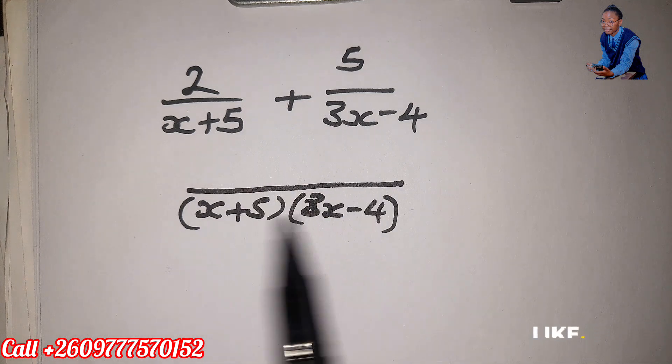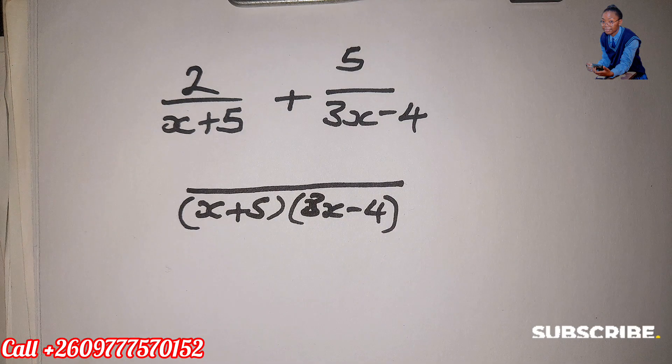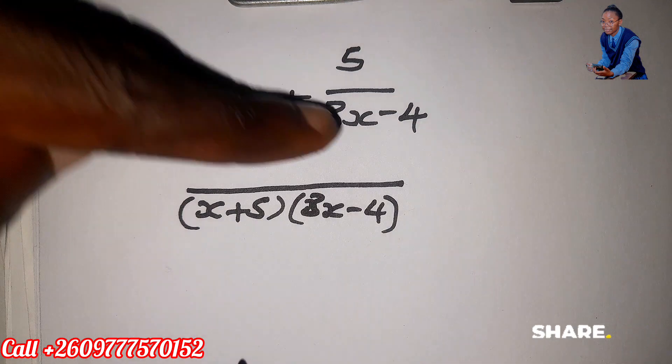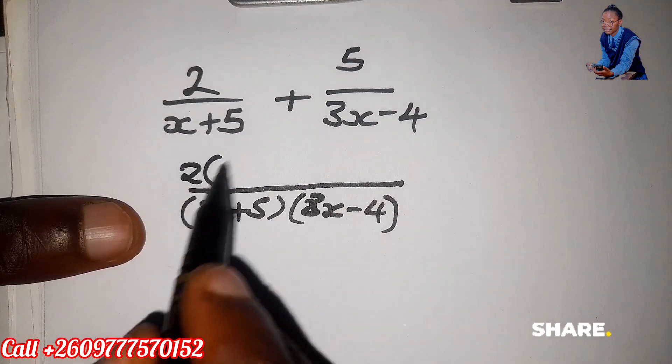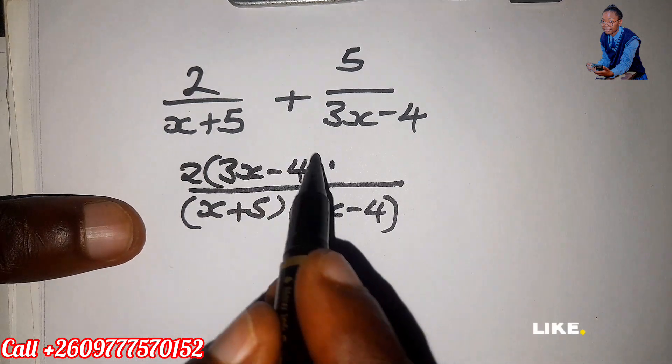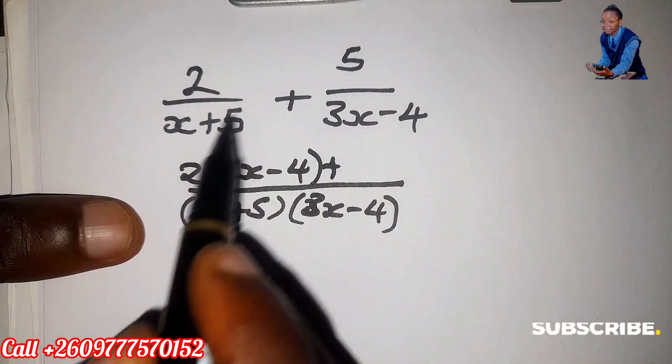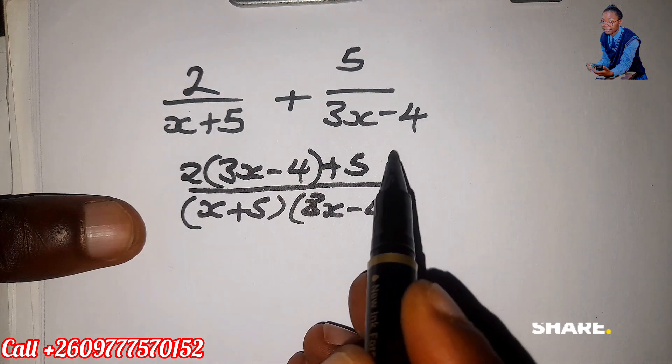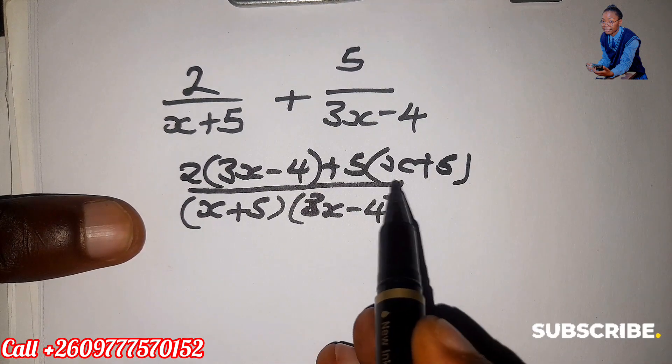Now you've shown that you're multiplying them, then just cross multiply. This 2 multiplied by 3x minus 4, plus this 5 multiplied with this one, which is 5, open bracket, x plus 5.